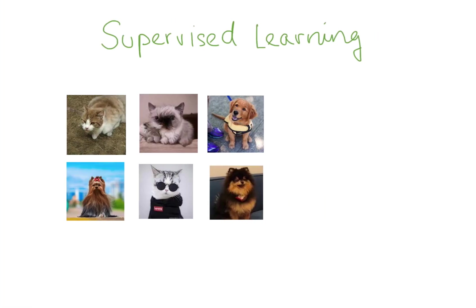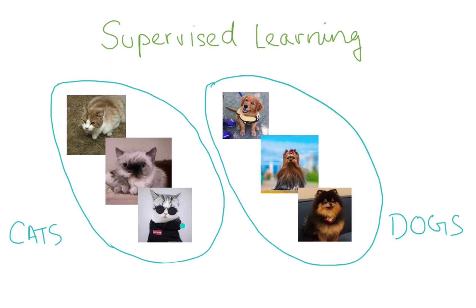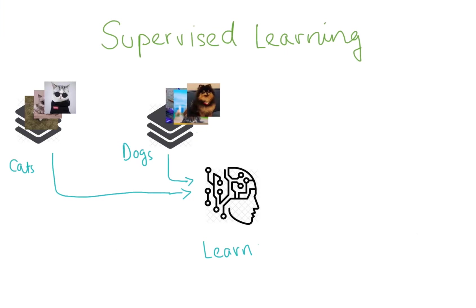So what is supervised learning? Imagine that you have these images, cute images of cats and dogs and you go ahead and start labeling them. You call all these images which represent cats as cats and these images as dogs. You take these images and put them through the machine and ask the machine to learn because you have them labeled.